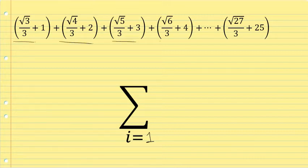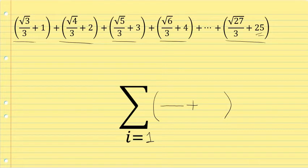Each of the terms in this sum has two terms. Each of the 25 terms in this sum has two terms. The first term is a fraction. And then the second term is simply a constant, an integer, starting at 1 and going the whole way up to 25.